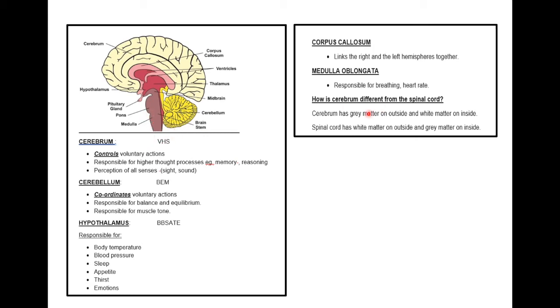Some extra information: how is the cerebrum different from the spinal cord? The cerebrum has gray matter on the outside and white matter on the inside, while the spinal cord has white matter on the outside and gray matter on the inside.